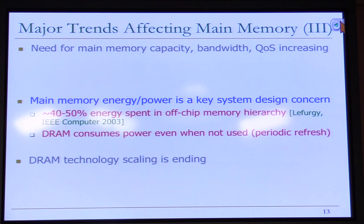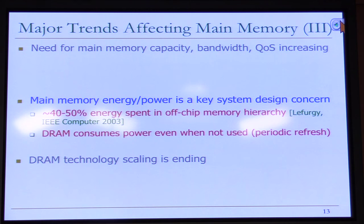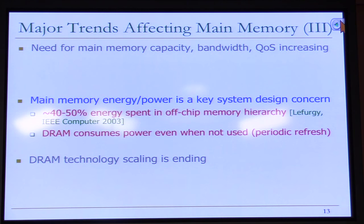Energy and power is a key system design concern. A paper by Charles Lefergy and others from IBM Research showed that approximately 40% to 50% of the entire system energy in IBM's big iron servers is spent on the off-chip memory hierarchy — including off-chip interconnect, caches, DRAM, and storage. Many studies confirm that memory consumes huge power on mobile systems also. One problem is that DRAM consumes power even when it's not used.